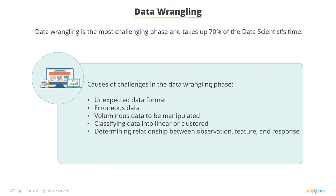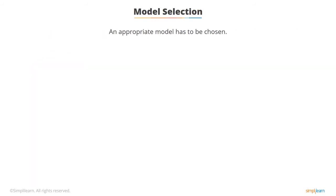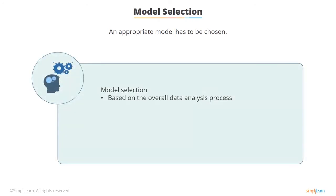Understanding the structure of data means understanding how the data is organized — linear or cluster — and plotting it if possible. Determining the relationship of variables: observation, feature, and response are keys, and the relationship between them must be determined. It's difficult to determine this relationship. Model selection is based on the overall data analysis process to draw conclusions and make accurate predictions — selection should be accurate or it will lead to many iterations and a waste of time.